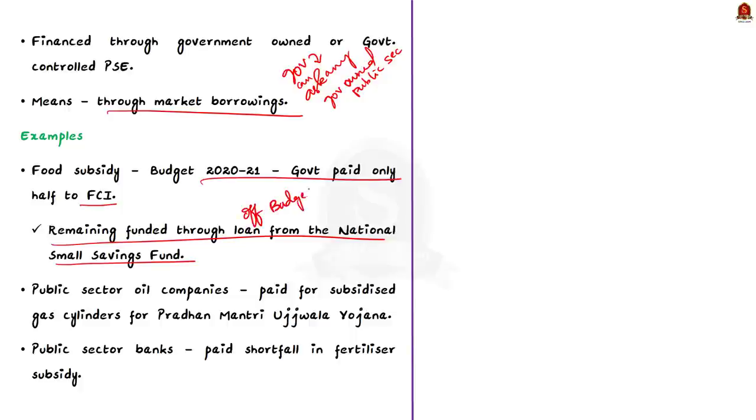So, similarly, other public sector undertakings have also borrowed for the government. For example, public sector oil companies like Indian Oil Corporation Limited, Hindustan Petroleum, Bharat Petroleum, they were asked to pay for the subsidized gas cylinders for the Pradhan Mantri Ujwala Yojana beneficiaries in the past. Similarly, public sector banks have also been used to fund off-budget expenses. For example, loans from public sector undertaking banks were used to make up for the shortfall in the release of fertilizer subsidy. And if you take main entities like NABARD, that is National Bank for Agricultural and Rural Development, it has borrowed for both rural development and irrigation projects. So, like this, many entities have borrowed on behalf of the government. And these are called as the extra budget borrowings or off-budget borrowings or finances. And its main aim is to meet the fiscal deficit target.